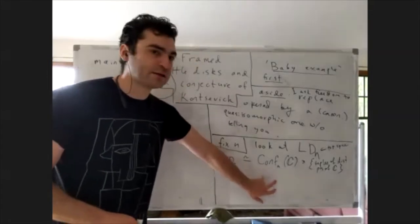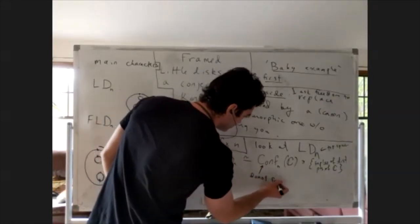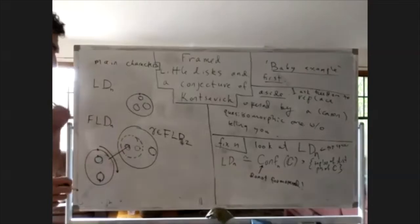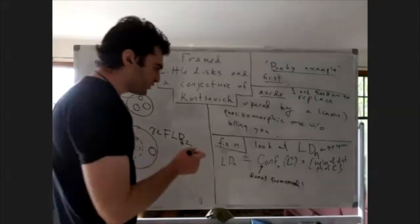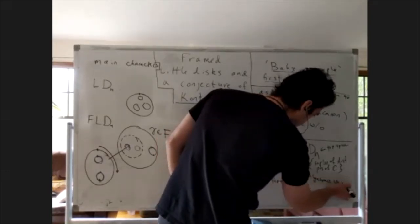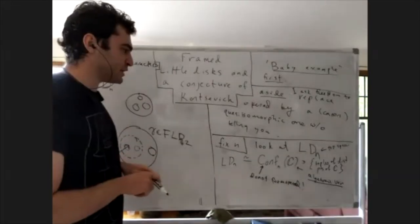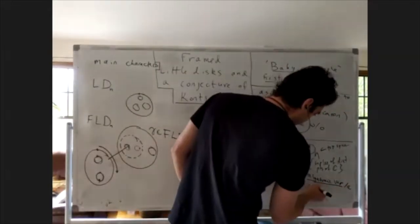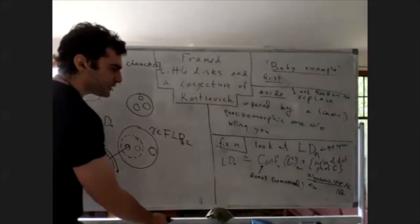This configuration space model does not form an operad when n varies, which is a big problem for operad-theoretic questions. On the other hand, there is a big advantage: this space is an algebraic variety, unlike the configuration space of little disks which is only a real topological space. In fact, it can be made an algebraic variety over the rational numbers — the defining equations are defined over Q.